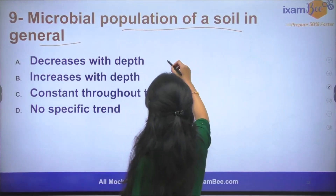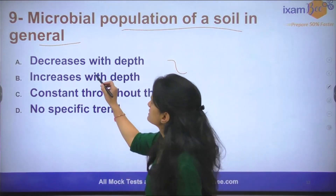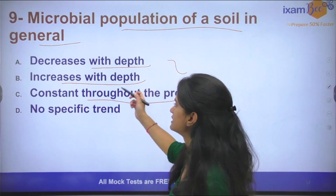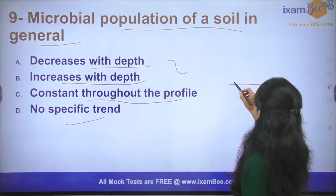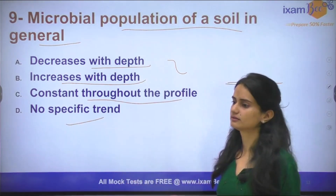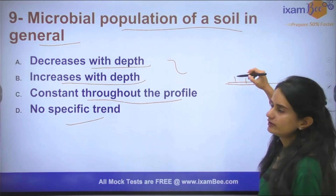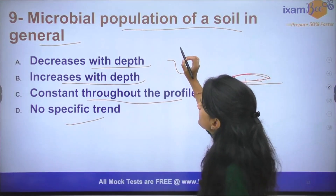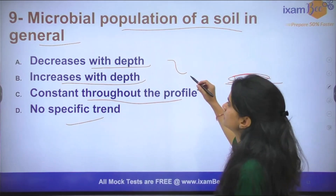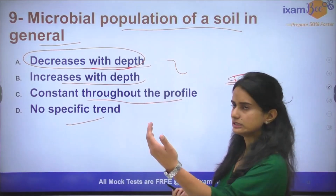Question number 9: Microbial population of a soil in general — how does it vary with soil depth? Does it decrease, increase, remain constant, or is there no specific trend? Basically, what happens in our upper layer is that the answer is: microbial population decreases with depth. As we go down, the microbial population decreases.